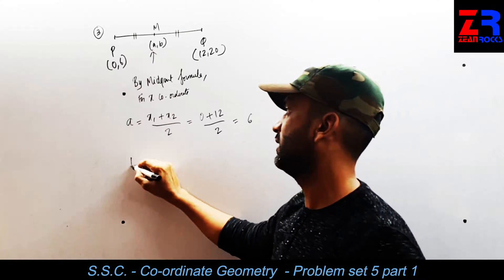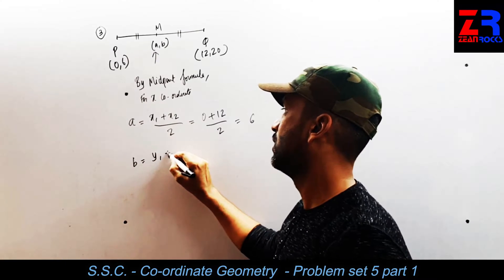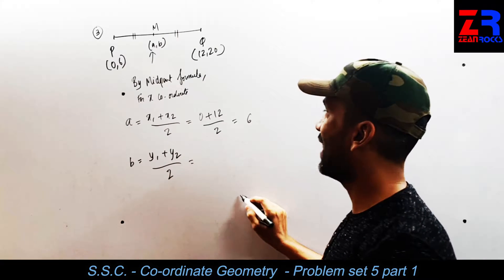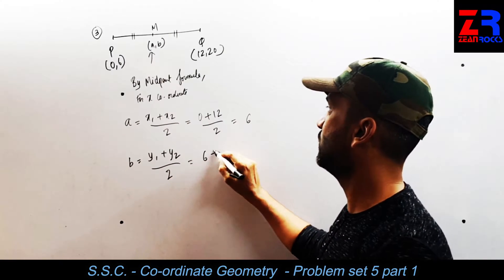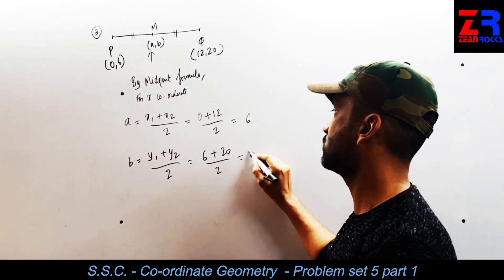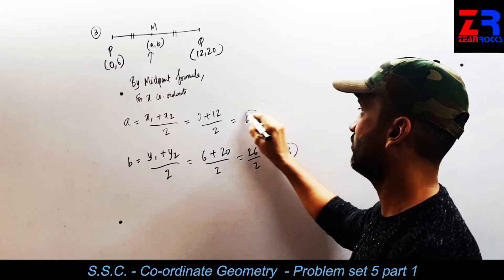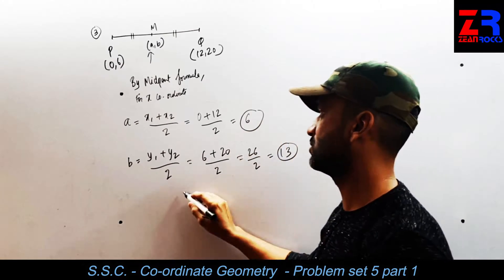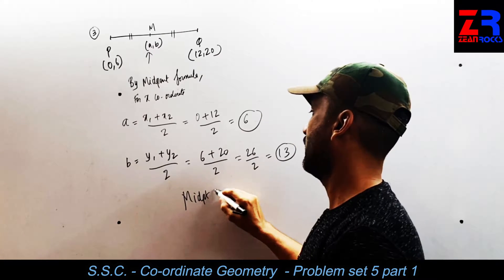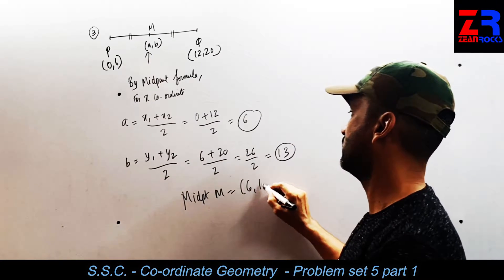So the value of A is 6. Next, for the y-coordinate B: y1 plus y2 divided by 2 gives 6 plus 20 divided by 2, that is 26 divided by 2, which is 13. So the midpoint M is (6, 13).